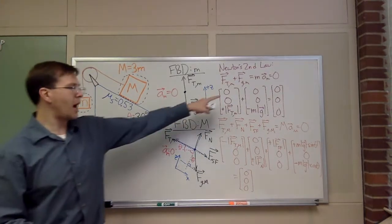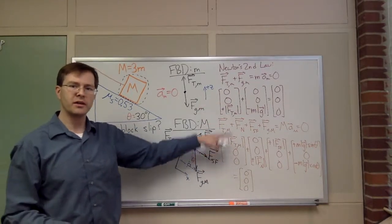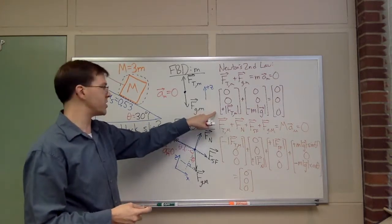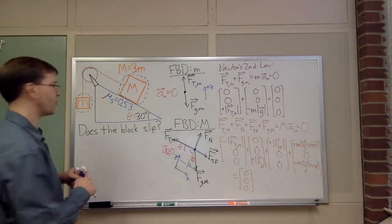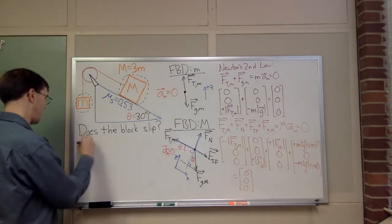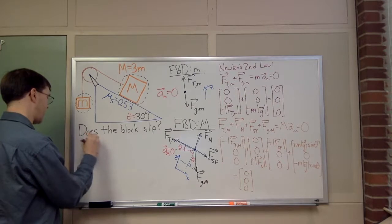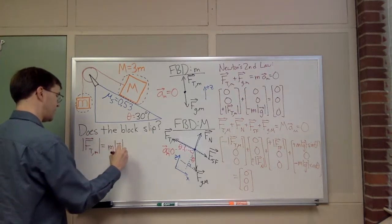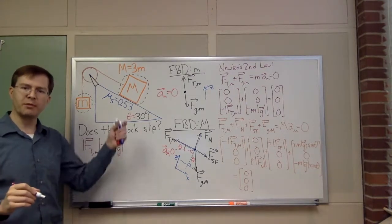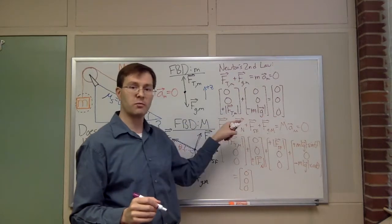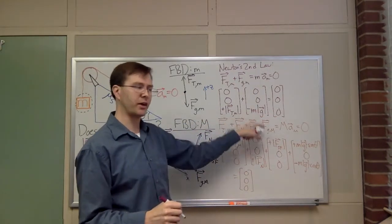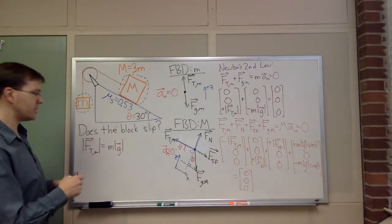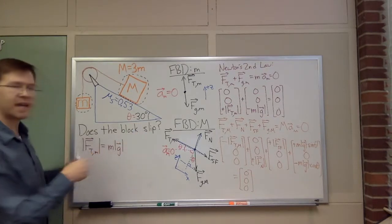Copying down the component equations: for the first free body diagram, there's only one interesting component equation, and it quickly tells me what the tension force has to be. It says the magnitude of the tension force on the little mass has to equal little m times |g|. This is only true because there's no acceleration — if the mass were accelerating up or down, the tension would be beating gravity or losing to it.